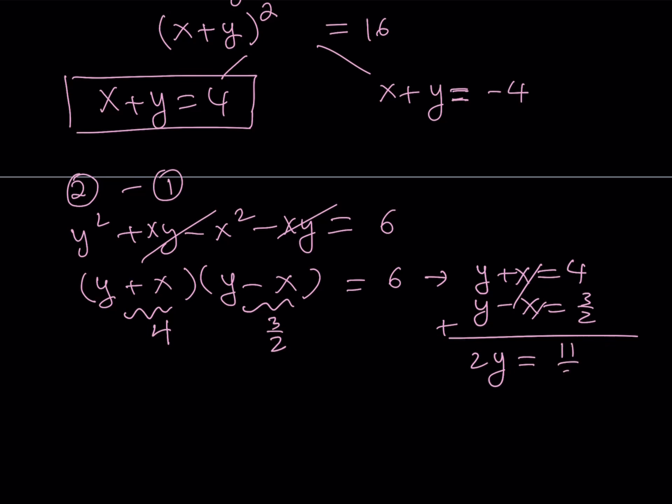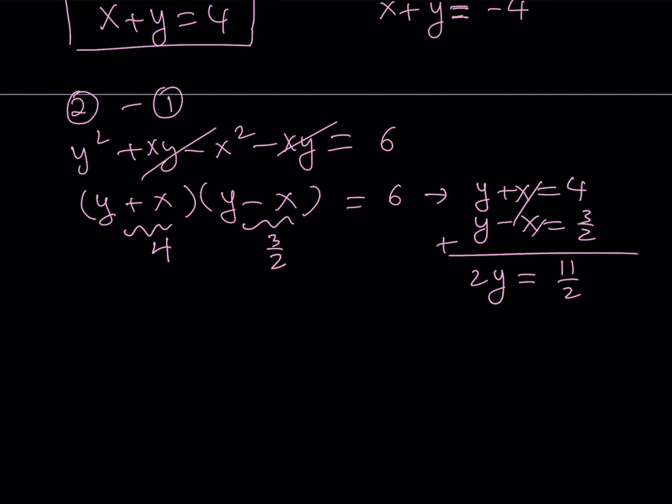I can write that as 11/2. If you divide both sides by 2, you get y = 11/4. Now, to find x, you can use either equation. Since I know that x + y = 4, which can be written as 16/4, then x is going to be 5/4 from here.